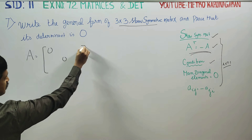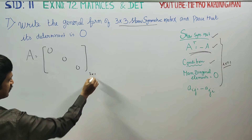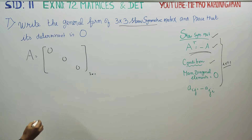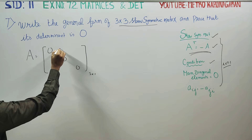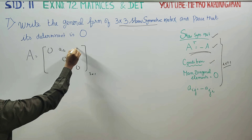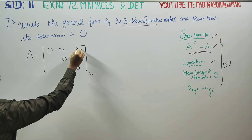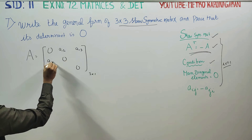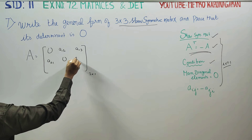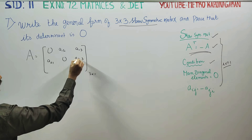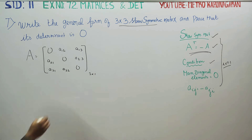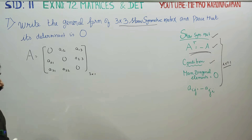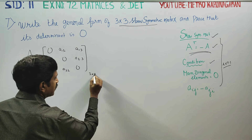This is a 3 by 3 matrix. The elements are: A11, A12, A13 in the first row; A21, A22, A23 in the second row; A31, A32, A33 in the third row. This is the full 3 by 3 matrix.